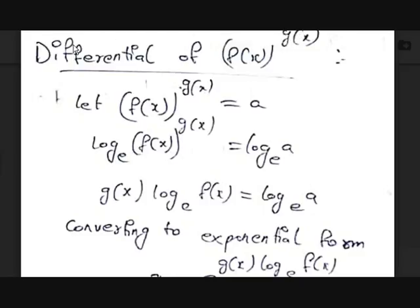Let's imagine f(x)^g(x) = a. Now, what happens if we apply logarithm (ln) on both sides? You get log of f(x)^g(x) equals log a. In logarithms, the exponent comes before the logarithm, so this becomes g(x)·log f(x) = log a. There is no need to mention base e explicitly, as the base is e when not stated.